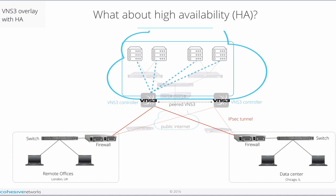VNS3 high availability solutions have automatic failover features and there is no user intervention required. Note that the two peered VNS3 controllers provide overlay network failover high availability, but not technically IPsec failover. The endpoint IPsec devices should have their own high availability features. This diagram shows IPsec active tunnels from each remote site — the solid red line. The dashed red line is a passive tunnel which is up and ready to take over if the active function needs to make a hot standby.